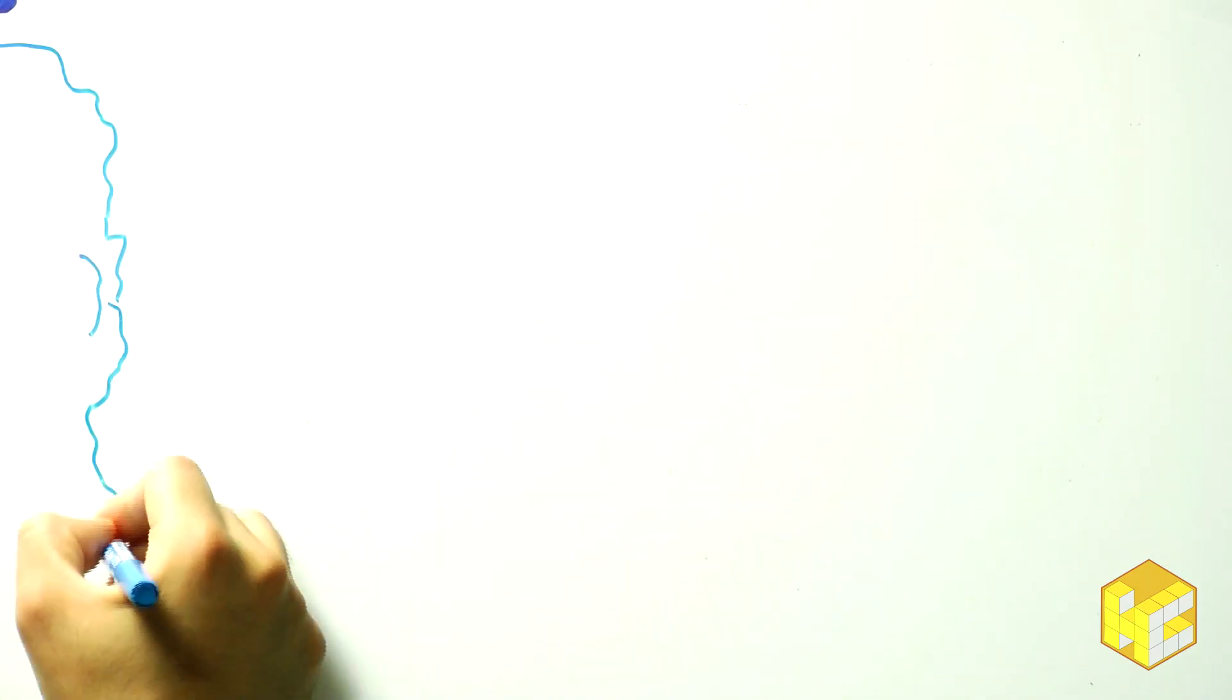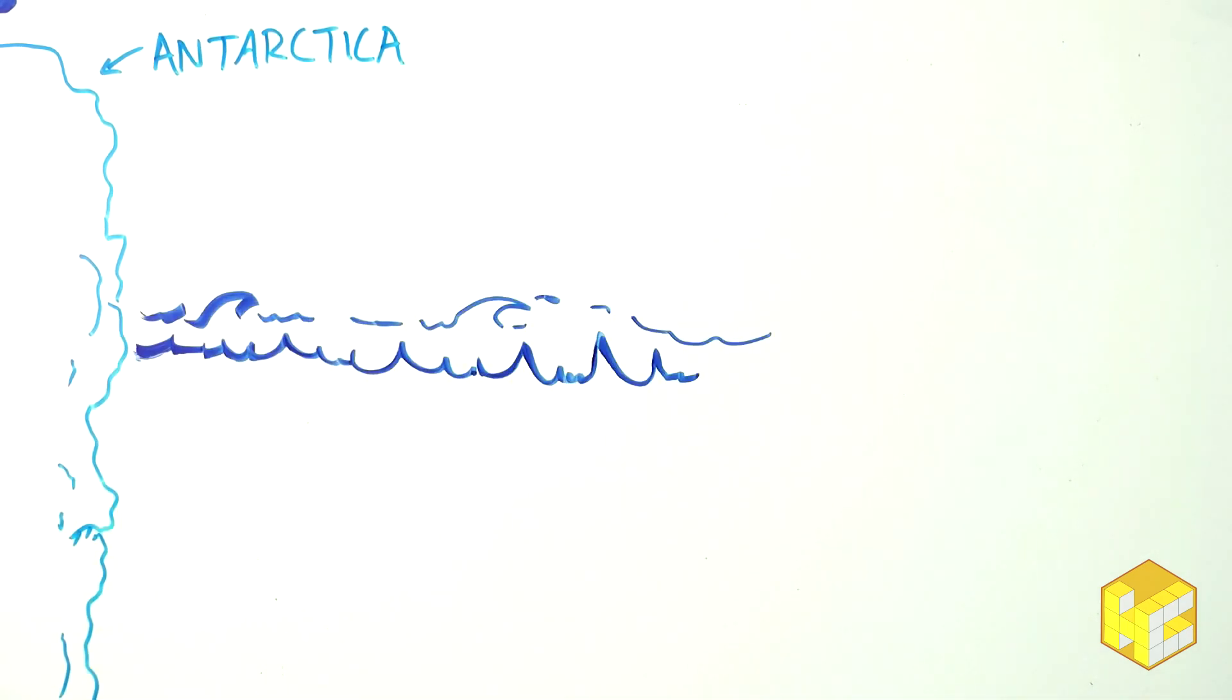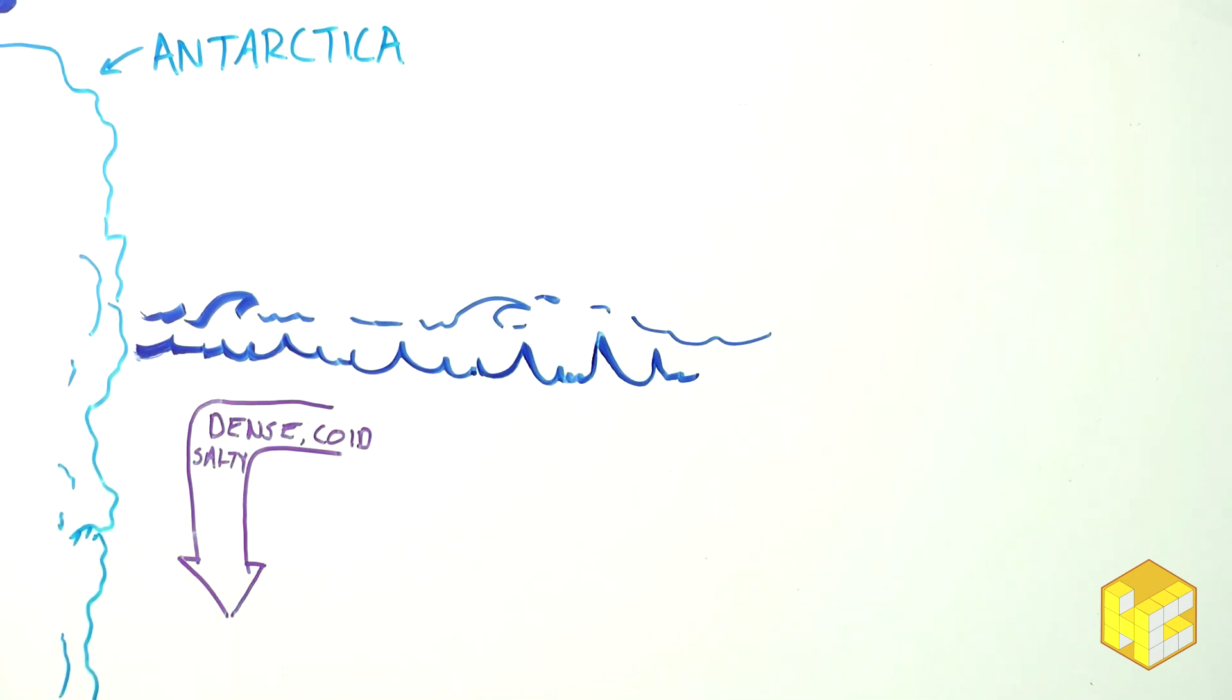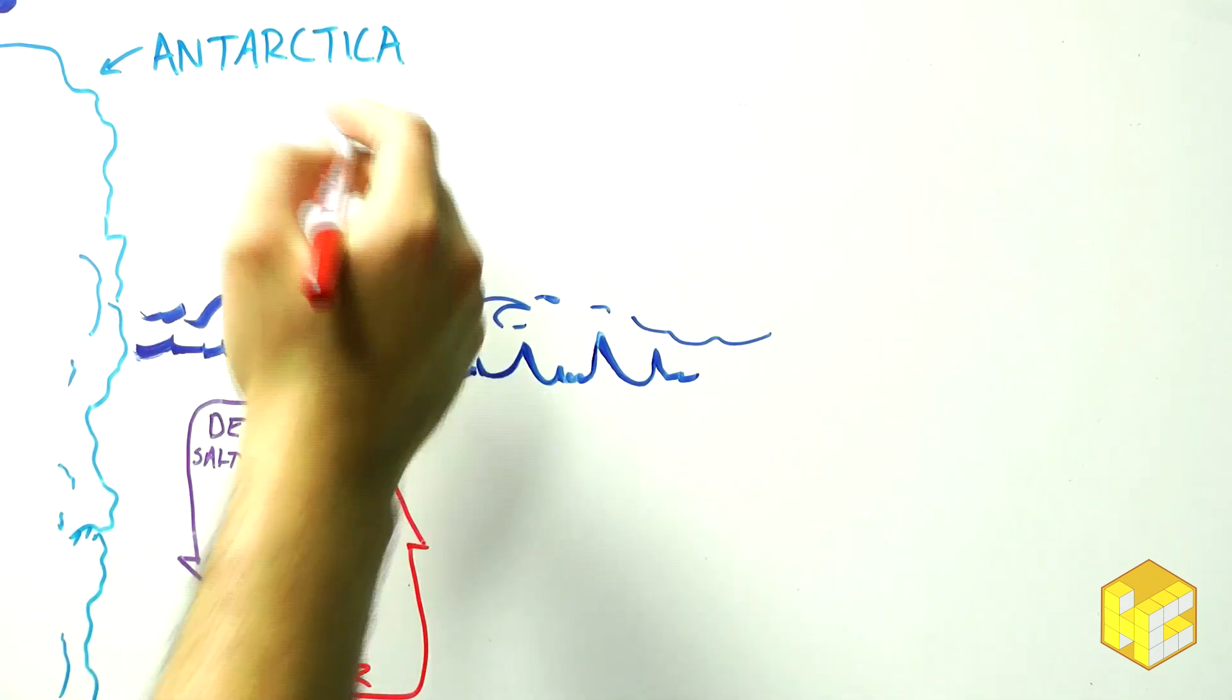Now, in normal circumstances, during winter in the North Atlantic and near Antarctica, cold, salty water sinks to the bottom of the ocean. Warmer water comes to the surface and releases its heat into the atmosphere.